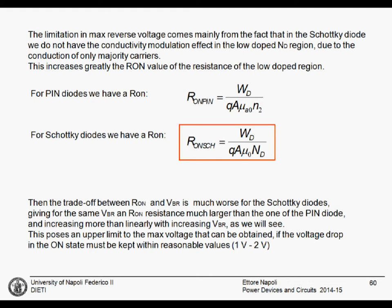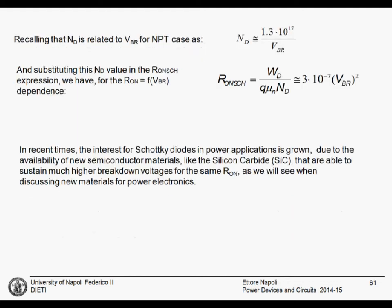We cannot design Schottky diodes for very high reverse voltages, otherwise the on-state resistance becomes huge and you lose all the benefits of using them — the on-state voltage drop should be no larger than one to two volts. We can see this clearly: the breakdown voltage and the doping in a PIN junction — also true for Schottky diodes — follow an inverse proportional relationship, where the doping is inversely proportional to the breakdown voltage.